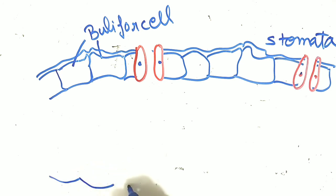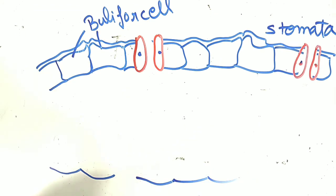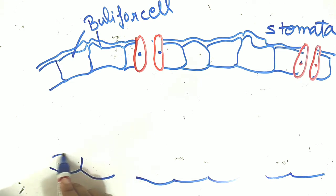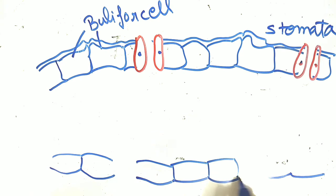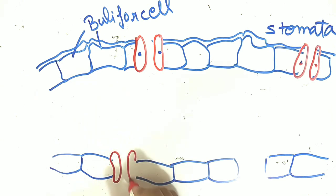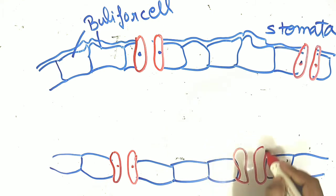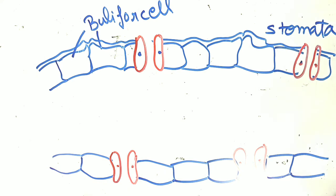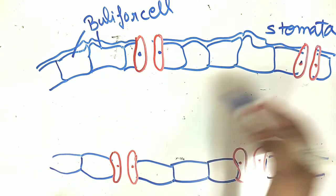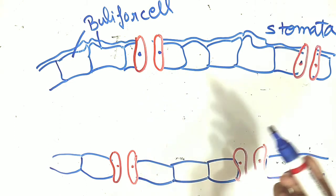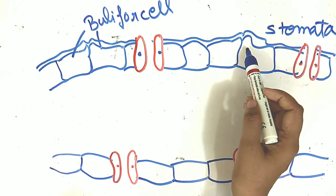Lower epidermis में cuticle absent होती है, और रंद्र पाई जाते हैं. इसलिए इन्हें isobilateral leaf कहते हैं, या उभैरंधरी पत्ती भी कहते हैं. उभैरंधरी मतलब दोनों ओर रंद्र present होंगे. Transpiration के द्वारा बहुत ज्यादा वाष्पोत्सर्जन न हो पाए, इसलिए इसमें buliform cells upper epidermis पर present होती हैं.